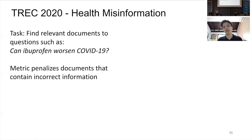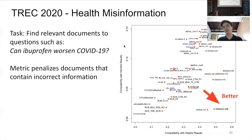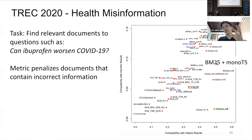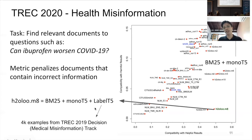Then there's the Health Misinformation track 2020. Interestingly, this track penalizes when the model returns documents containing incorrect information — fake news. The metric has two sub-metrics: the y-axis is the number of harmful documents presented to the user and the x-axis is the number of relevant documents. Further down and to the right is better. Using BM25 with MonoT5 we already beat the competition, and adding a label T5 model — trained on only 4,000 examples — significantly reduces harmful documents returned.